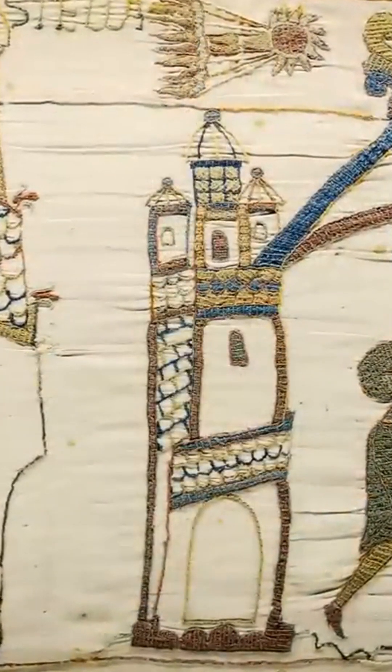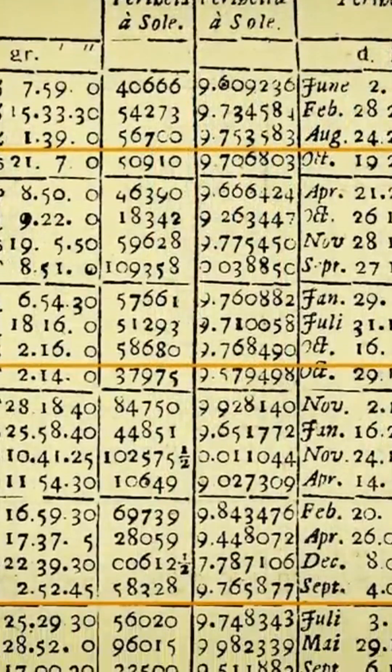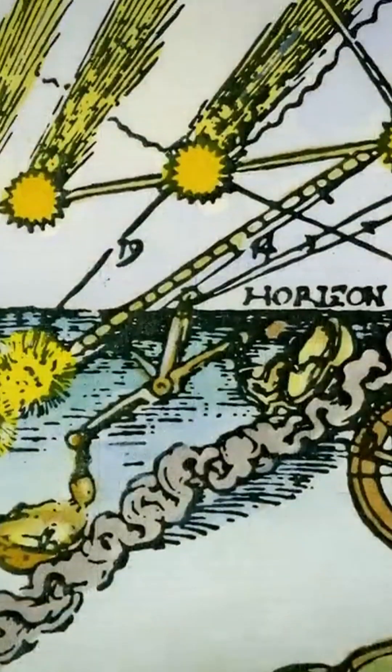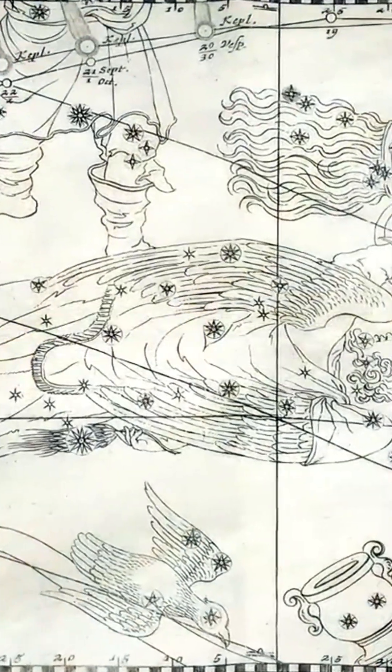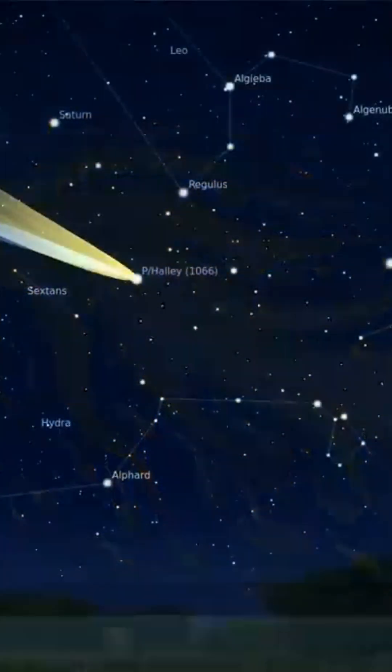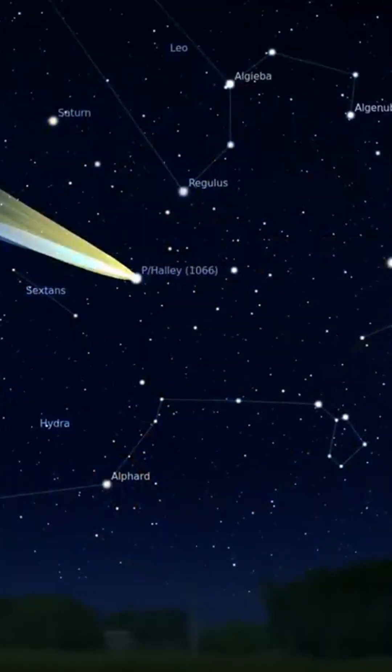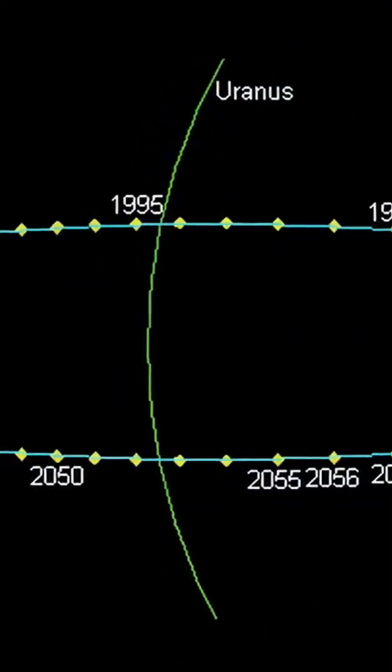In 1705, Edmund Halley published a book suggesting that all these successive comets, observed in 1531, 1607, and 1682, were in fact a single comet. He then predicted that it would again be observable in our planetary environment every 76 years.